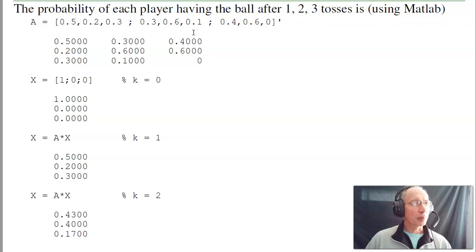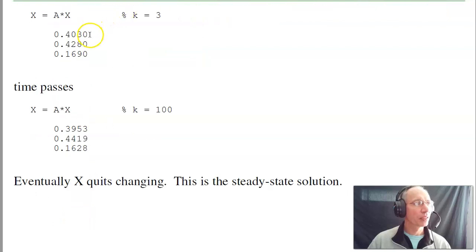To analyze the problem, one approach is to use matrix multiplication. First, input the state transition matrix into MATLAB. Input the initial condition, A has the ball. Then after one toss, X of k plus one is A times X of k. After one toss, A will have the ball half the time, B has it 20%, C has it 30%. Multiply by A again, I have two tosses, three tosses, four tosses, five tosses.